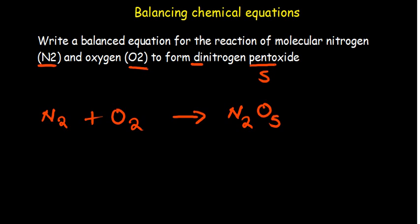Now we need to balance this equation, so we observe the number of atoms on the left and right-hand sides. Starting with nitrogen: on the left we have two, on the right we also have two — that's balanced. Now oxygen: on the left we have two, on the right there are five, so it is not balanced. We have a greater number of oxygen atoms on the right.